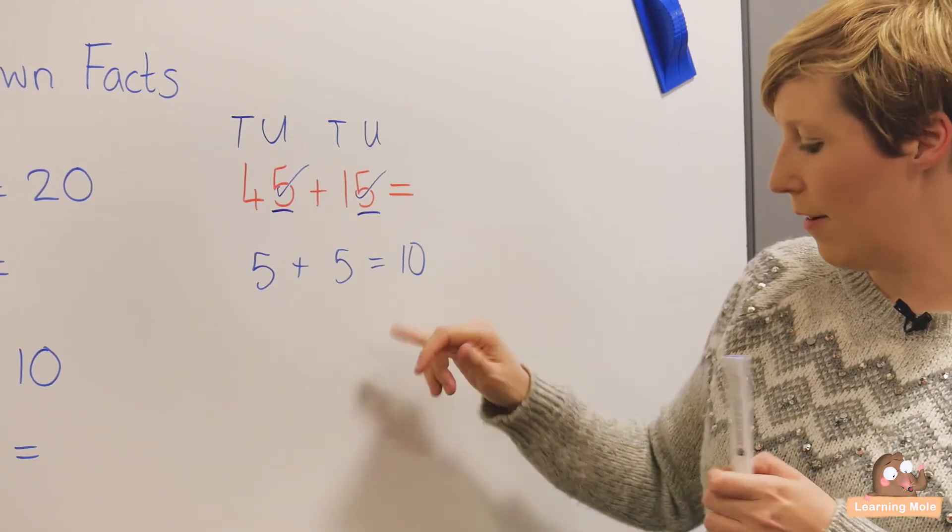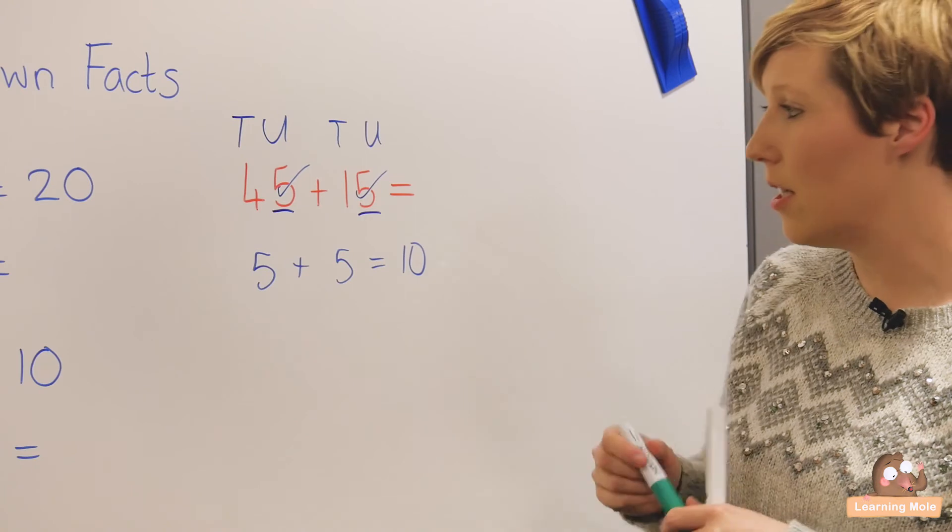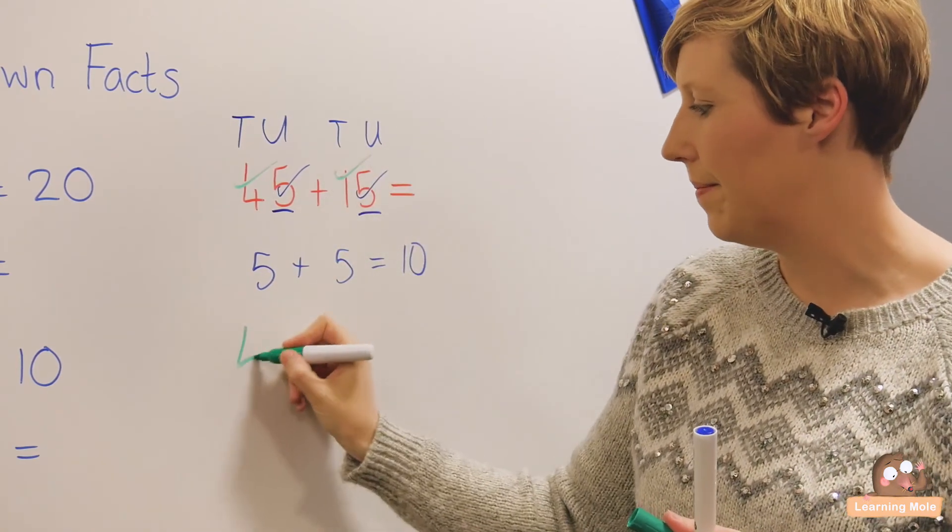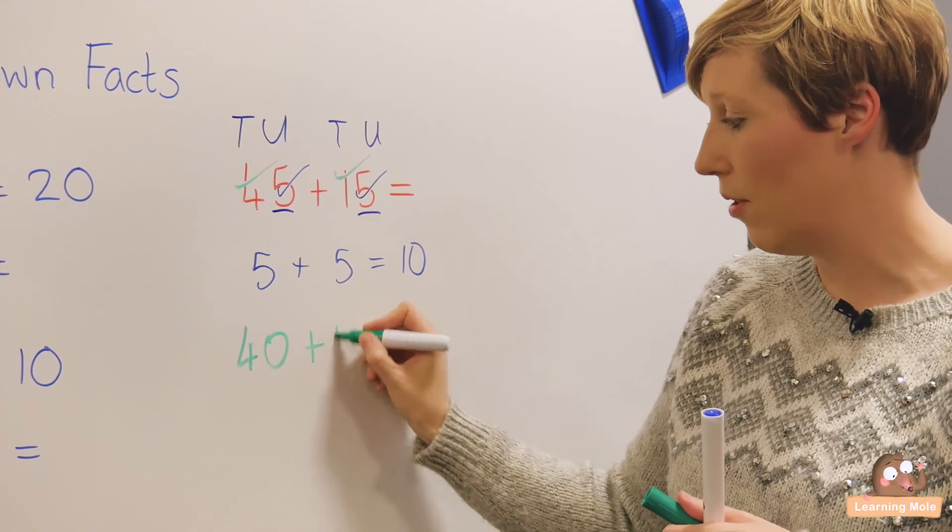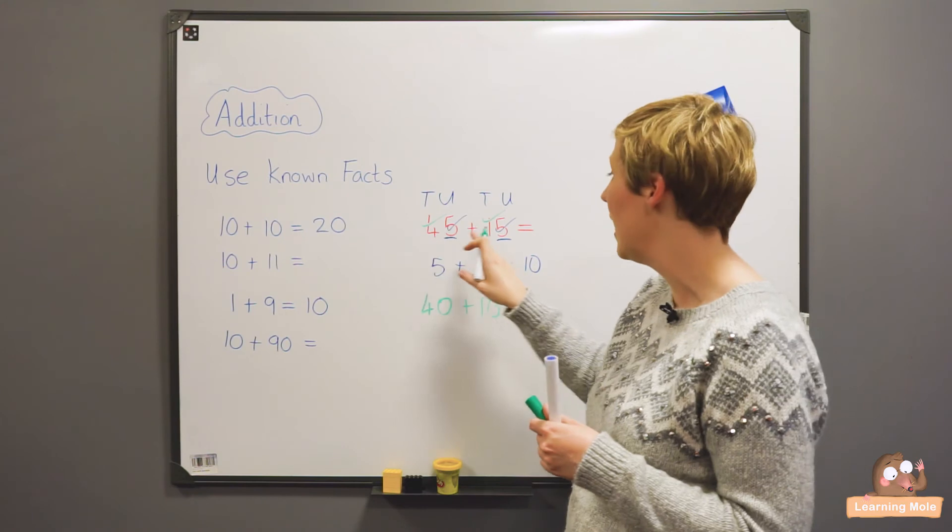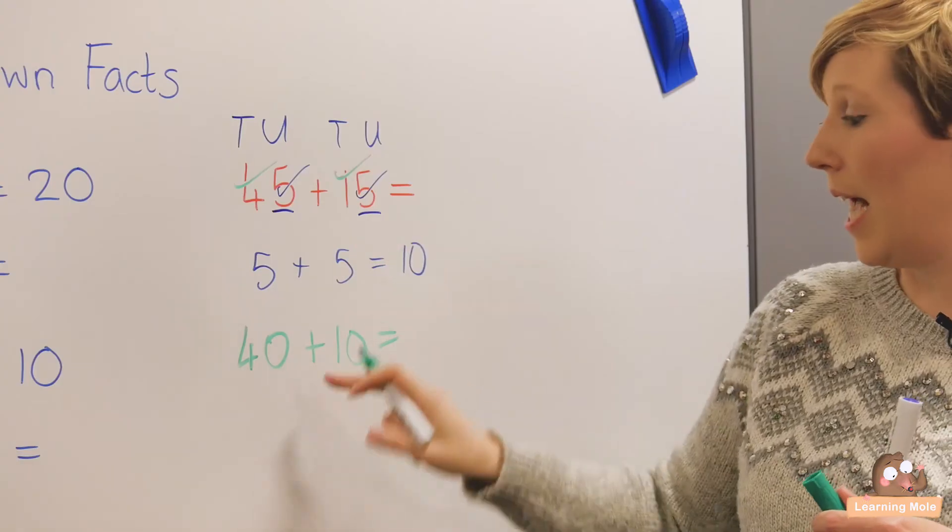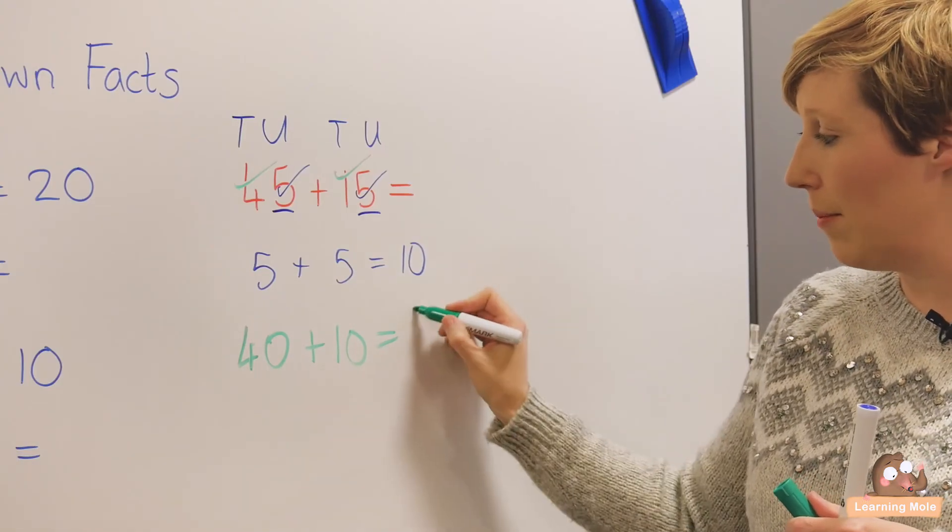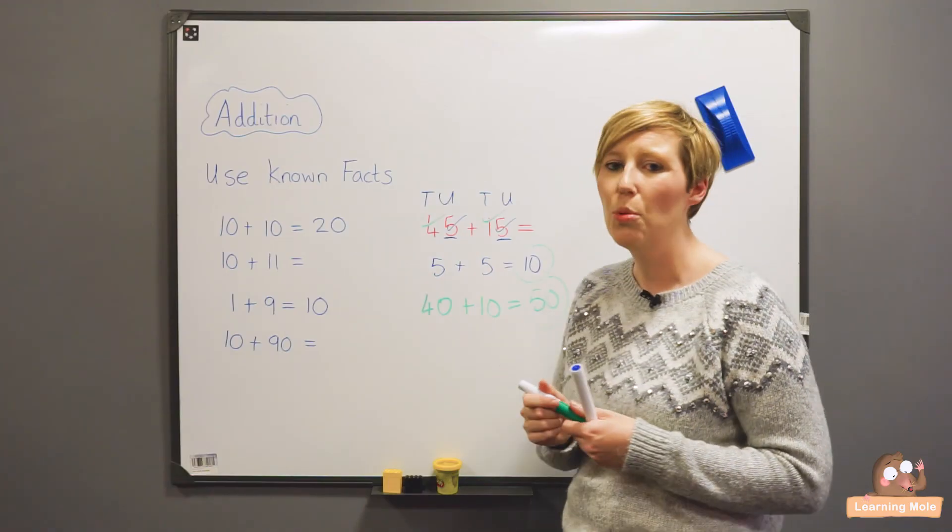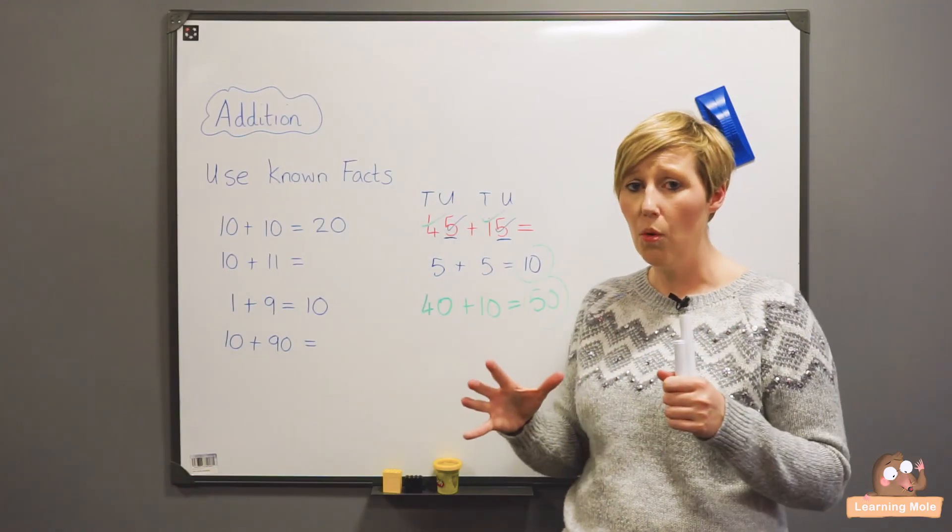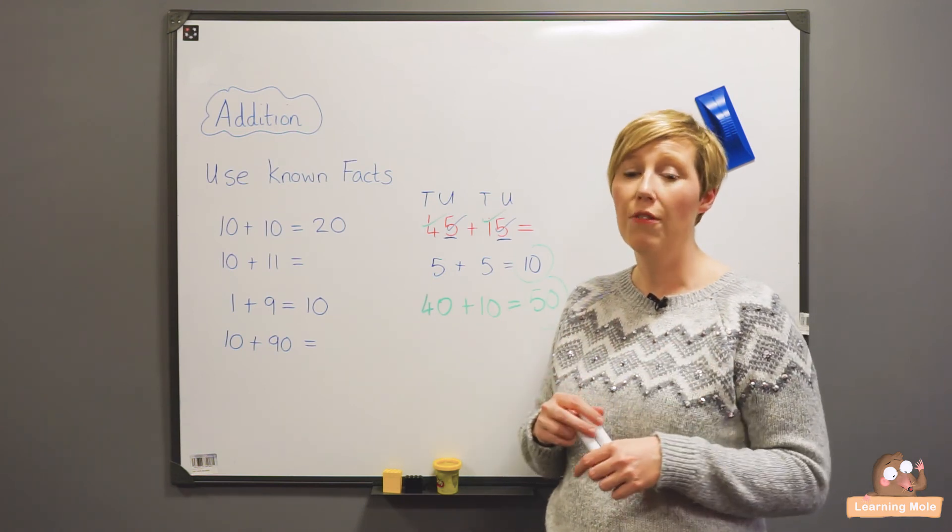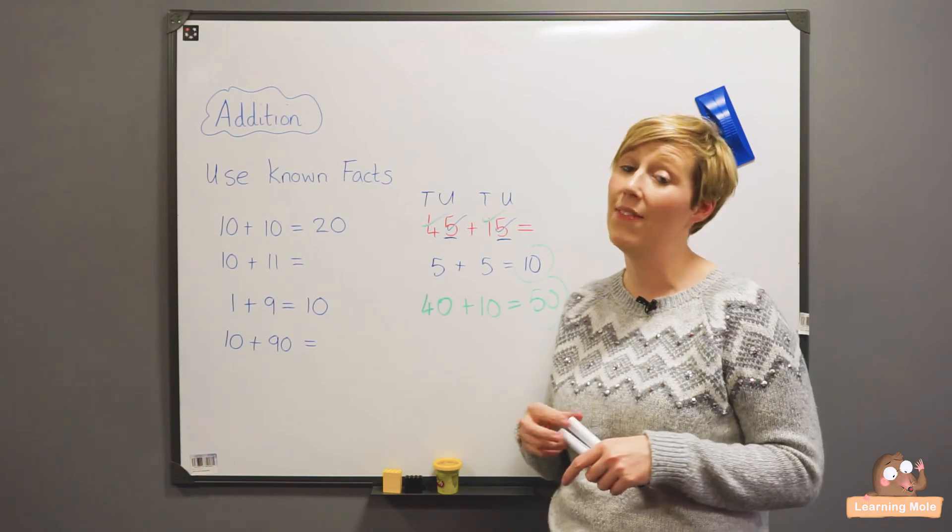So they've done their 5 plus 5 which is 10, and then they just need to look at their tens number. So they've got 40 and they've got 10, and again it's about talking through that place value to ensure that this is not 4, it is 40. This is not 1, it is actually 10. They've got their 40 and their 10 which is 50, and then they can add their two numbers together. So it's really about using what they know and putting that into context within a different range of calculations or problem solving activities.